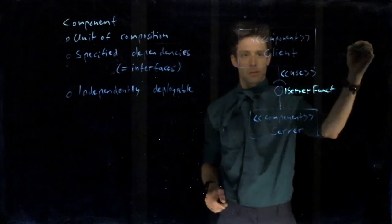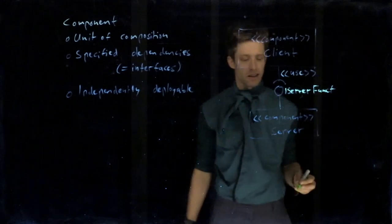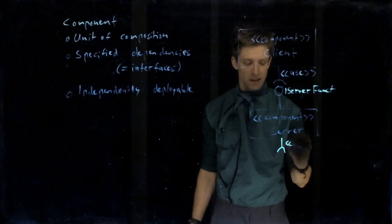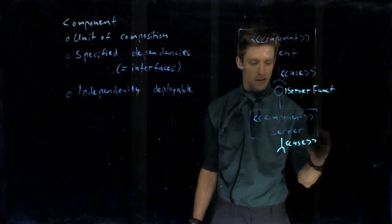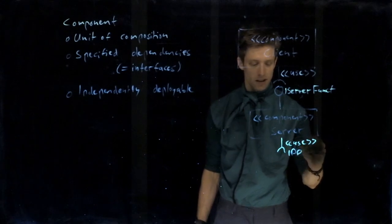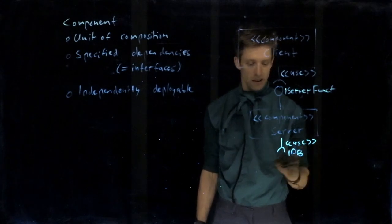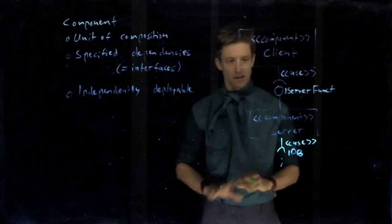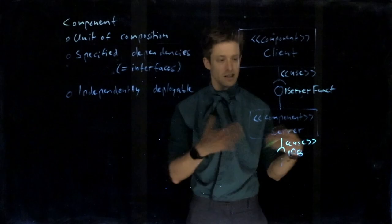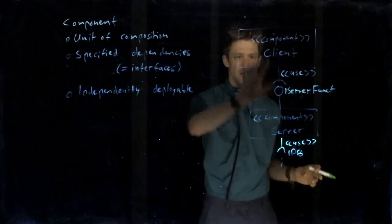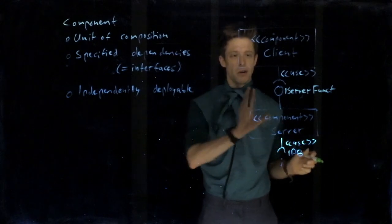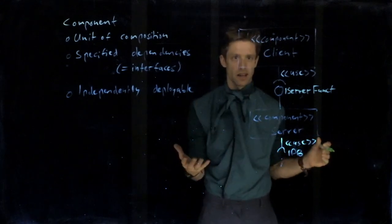We could have more of those. So the client could depend on something else. The server could depend on something. For example, maybe the server needs to have some kind of database connection. Then, we could specify that as idb or something. And we don't have to continue here. But you could imagine that there is a database that provides this functionality and so on. So this is a way each of these could be extremely complicated. But it's a very easy way to say we have these two components and that's how they are connected.